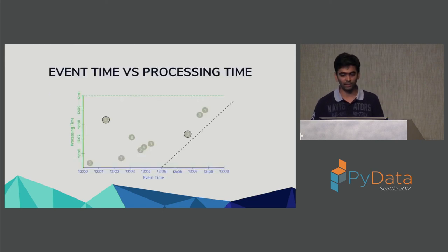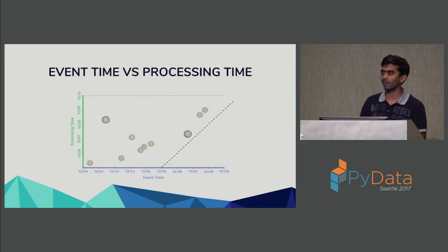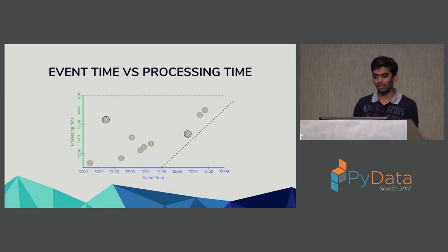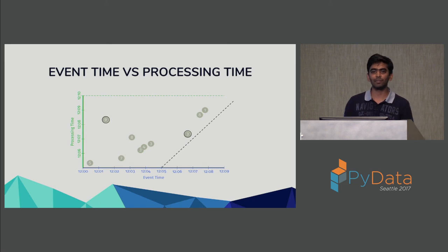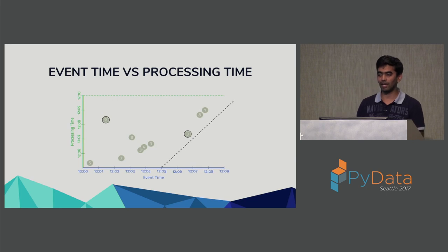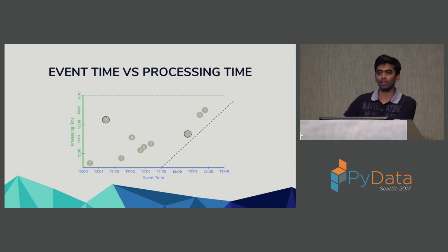I briefly touched upon event time and processing time. Event time is when the event actually happened — so if someone is playing the mobile game at 8 o'clock, the event time is 8. Processing time is when you are actually processing that data. In a streaming pipeline, event time and processing time are very close, while in a batch pipeline you might be processing data that is a year old.